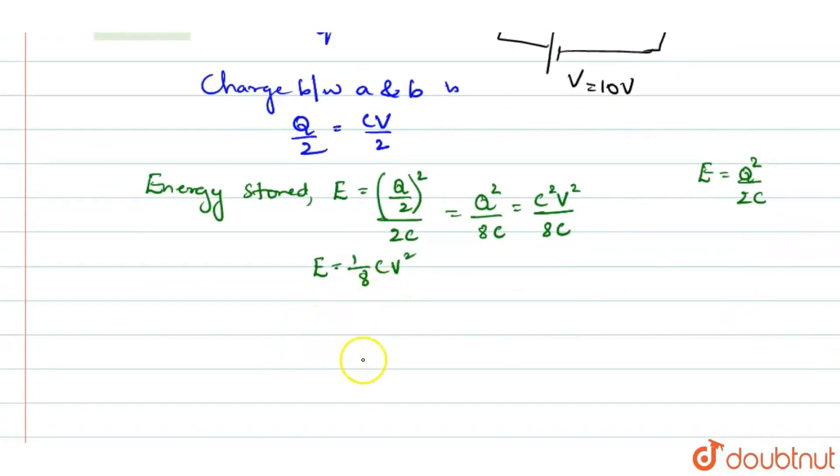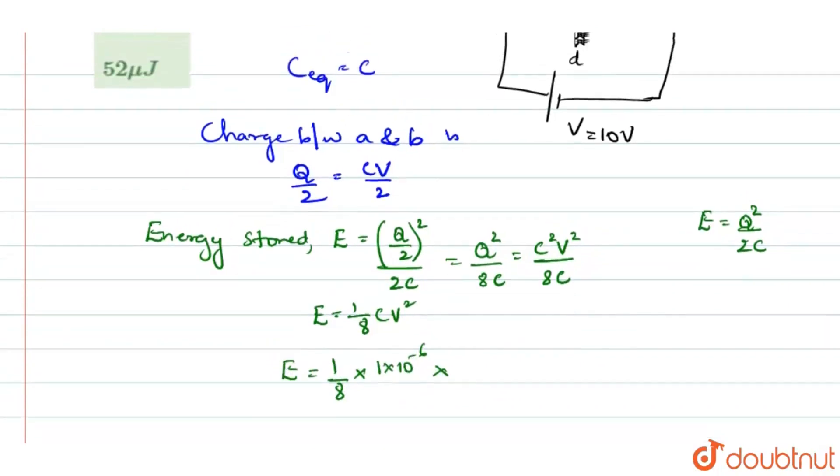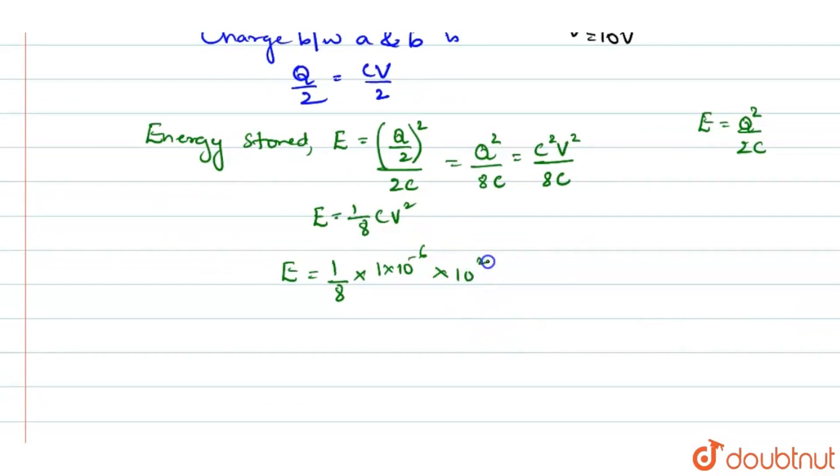Now, substitute for C and V. That E will be equal to 1 over 8 into C. Capacitance is 1 microfarad and V, the voltage of that is 10 volts. It is 10 square. And this when you simplify, the energy stored becomes 12.5 microjoules.